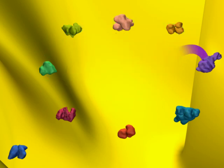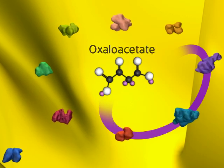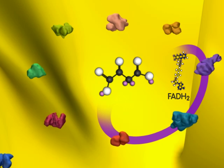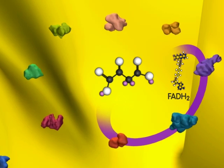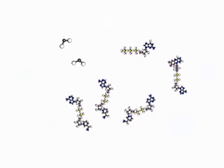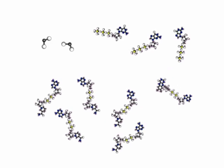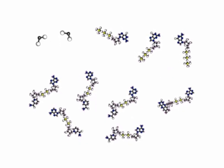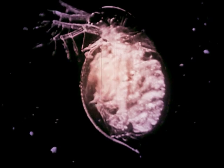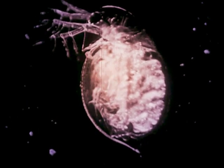Succinate is then recycled back to oxaloacetate through three more reactions. These steps produce FADH2 and one more NADH. All of the energy molecules made in the citric acid cycle, along with those produced by glycolysis, are essential for fully functioning cells, as errors in these pathways can lead to life-threatening diseases.